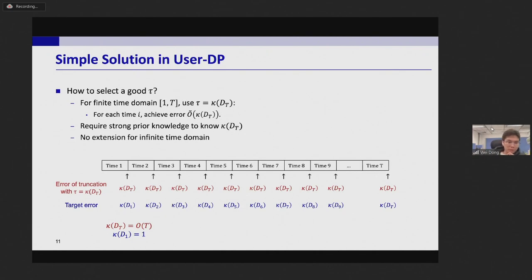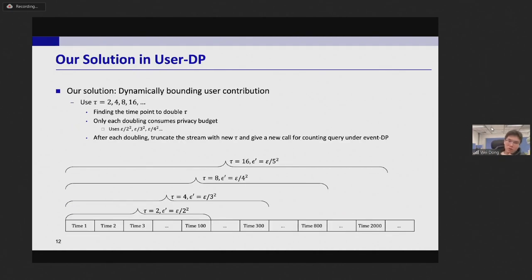Our solution is to dynamically bound user contribution. Here we use tau equals to 2, 4, 8 and we bound the time point to double tau. We use some tricks and only consume the privacy budget at each time of doubling. And for the highest time of doubling we use the privacy budget roughly equal to epsilon over l plus one squared. And after each doubling we truncate the stream with new tau and give a new call for the algorithm of counting query under event-DP.